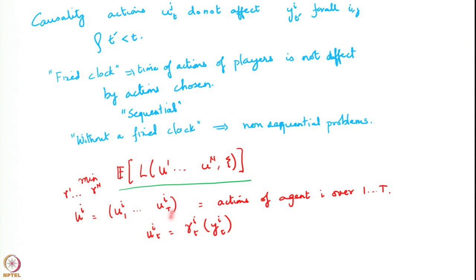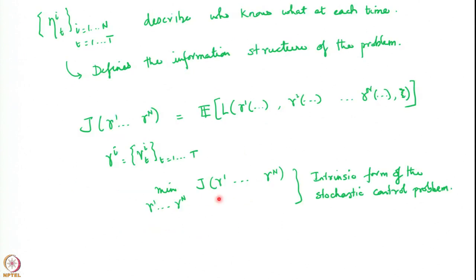The action u_i^t, the action of agent i at time t, is a function of y_i^t. The problem then is to find functions γ_1 to γ_n, where each γ_i is itself comprised of t functions γ_i^t running from t = 1 to T, the time horizon of the problem. The goal is to minimize J(γ_1, ..., γ_n), the expected cost. This was the intrinsic form of our stochastic control problem. The collection of these functions describes the information structure of the problem.